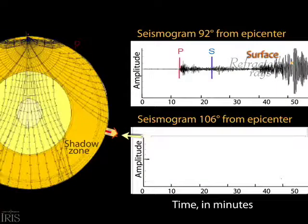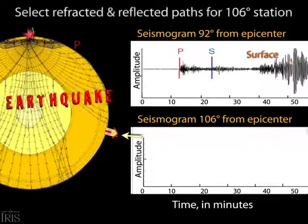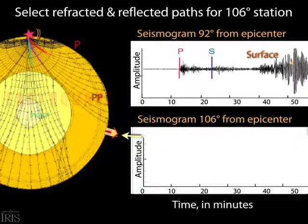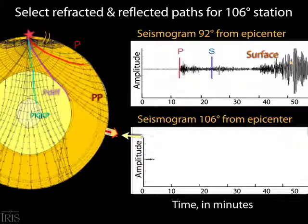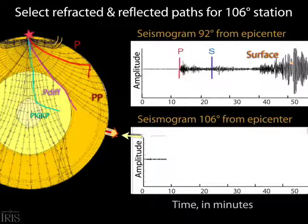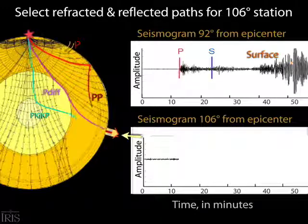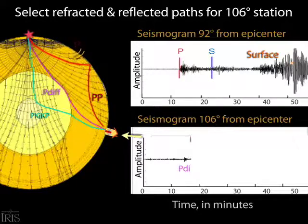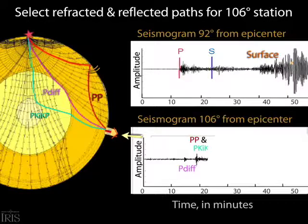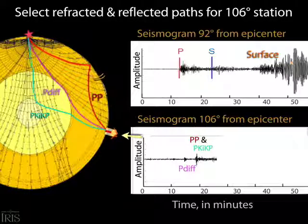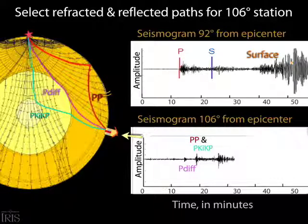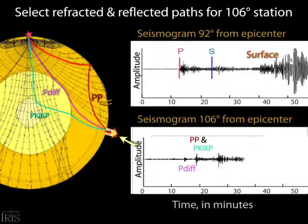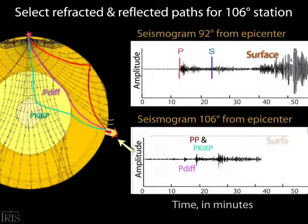Like these shadows on earth's surface, the seismic shadow zone is not an absence of seismic energy. Here we see P waves encountering boundaries and being redirected into the seismic shadow zone. For example, some energy is reflected off the surface and continues its curving path through the mantle. Other energy skirts along the core-mantle boundary and is diffracted back to the surface. Still other waves refract at the outer core-mantle boundary and reflect off the outer core-inner core boundary on their way to the station.